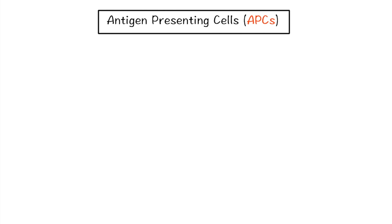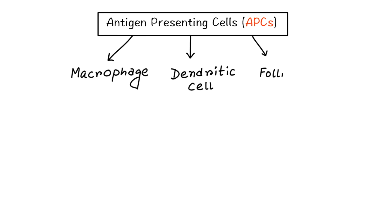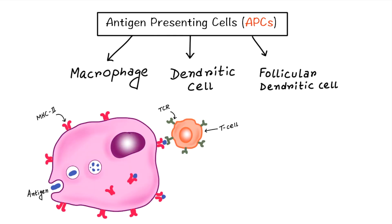Hello everyone. Today in this short video we will discuss three different types of antigen presenting cells. As we already know, macrophage, dendritic cell, and follicular dendritic cell are all antigen presenting cells with the capability to present antigen to immune cells. However, there are some differentiating features among them.